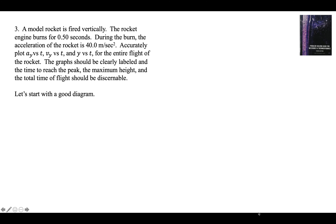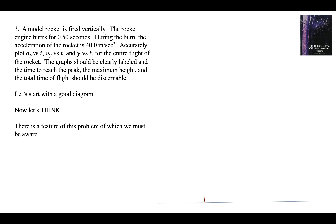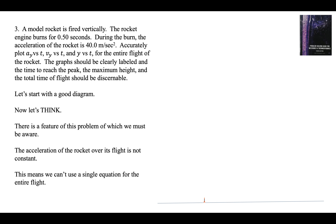Starting with the diagram — let's put the rocket on the ground. You have to be careful here because the acceleration of the rocket over the flight is not constant; it changes. So you have to be careful not to use an equation that's only valid for constant acceleration. We're going to separate the flight into two parts, because you can't use a single equation for the entire flight.